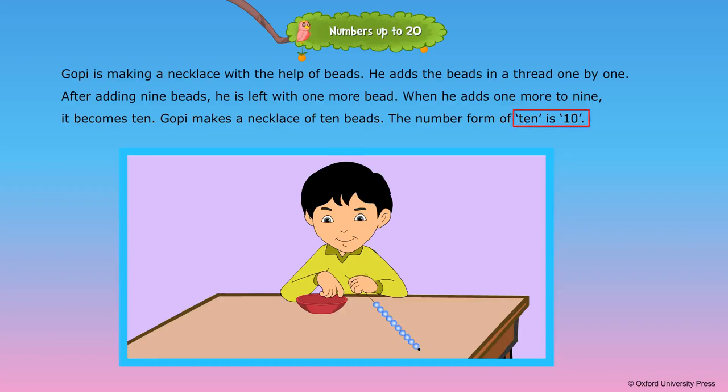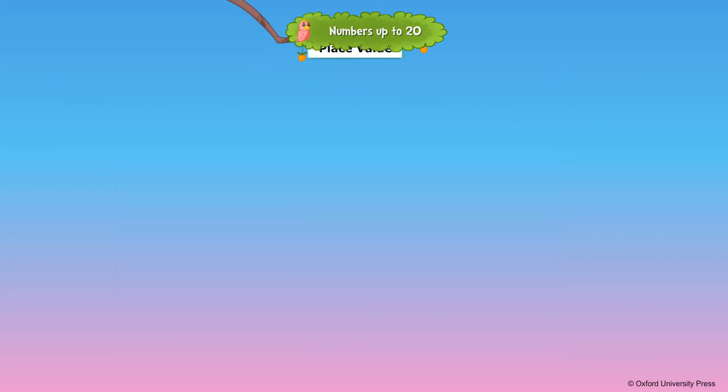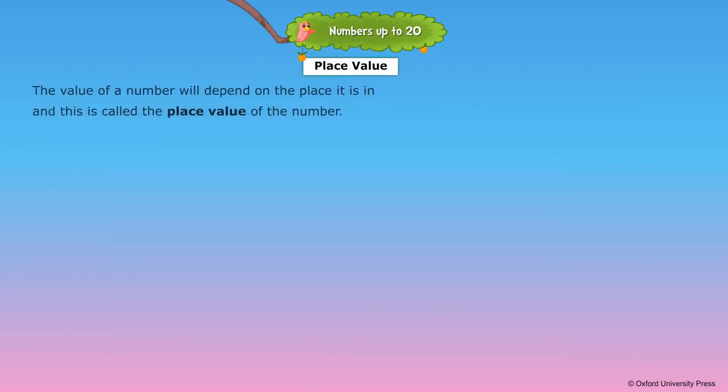The number form of ten is one zero. Place value: The value of a number will depend on the place it is in and this is called the place value of the number.